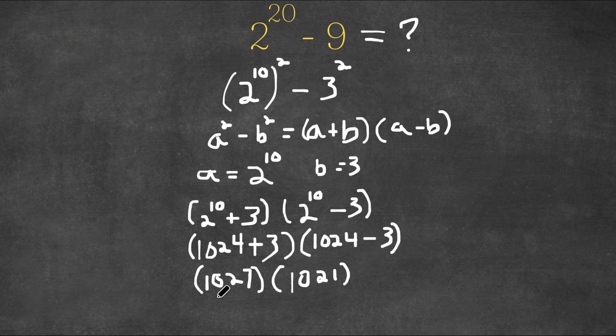Now what we're going to do is we're going to rewrite 1,027 as 1,000 plus 27.